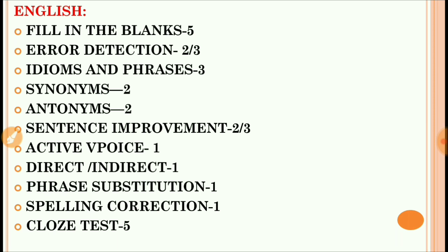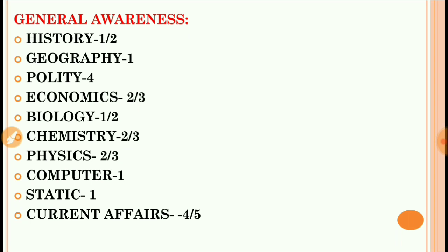General Awareness had history one or two questions, geography one question, polity four questions, economics two to three questions, biology one or two questions, chemistry two to three questions, physics two to three questions. If you see, more questions were asked from polity and science sections.